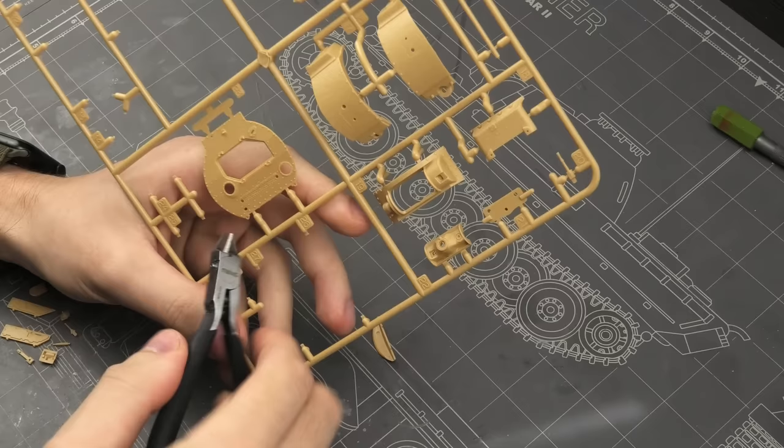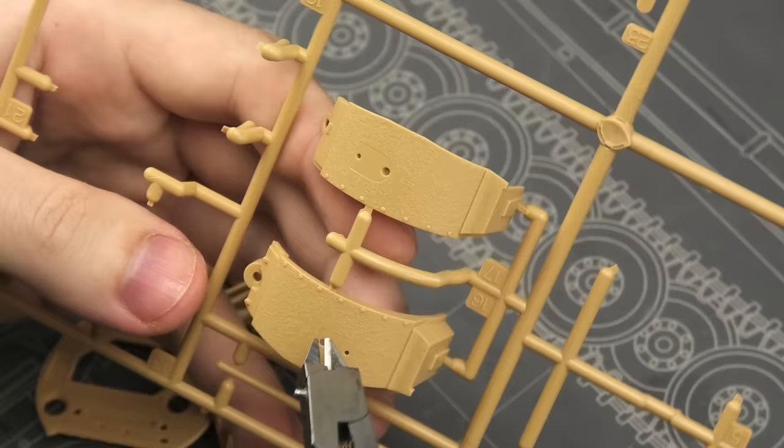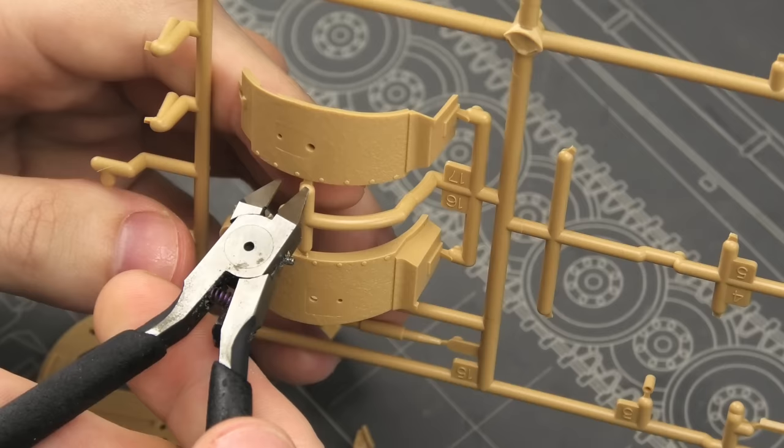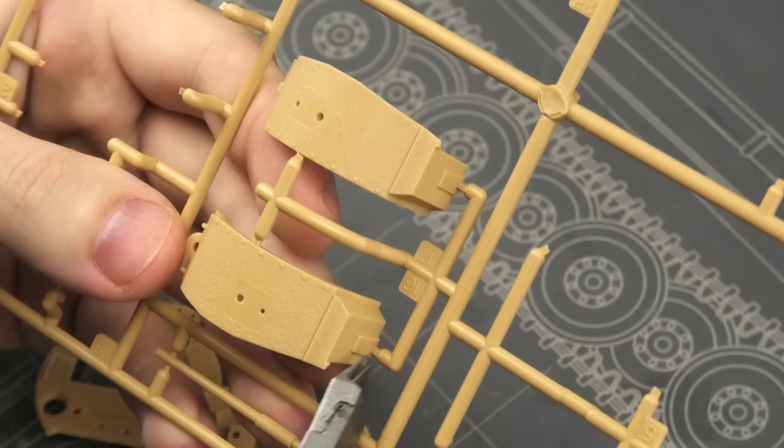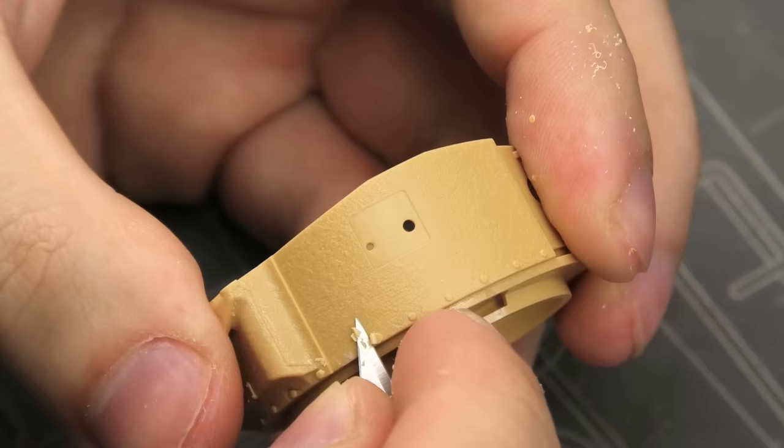I started with the turret assembly. When I compare it with the Bronco one from the previous model, it has significantly fewer parts, but also a lot of details are very simplified.